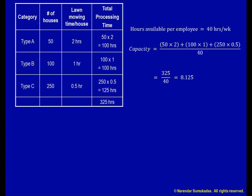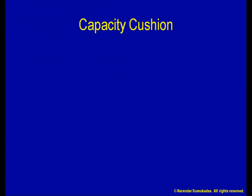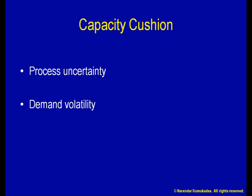When it stops raining, we start mowing, but the grass is too wet and it takes much longer than expected. Unfortunately, I didn't plan any extra capacity for that event either. As you can see, I need to plan some extra capacity to accommodate such events and uncertainties — I call that a capacity cushion. The greater the level of uncertainty in my process, the greater the capacity cushion I need. Another reason to build in a capacity cushion is to handle demand swings; the greater the unevenness of my demand pattern, the greater the capacity cushion I need.